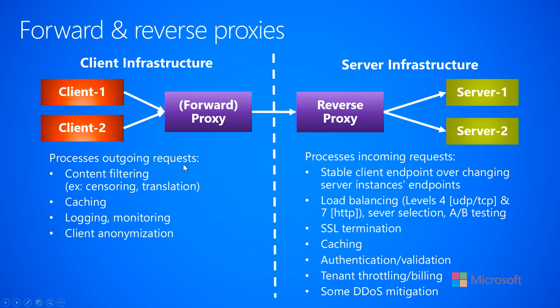A forward proxy processes outgoing requests, as opposed to the reverse proxy which processes incoming requests. The forward proxy can do content filtering — administrators might configure it to prevent certain traffic from going out, blocking websites deemed inappropriate, shutting down requests right at the proxy before any network traffic goes out over the internet. It could also be done for translation: if employees visit a website in a foreign language, the forward proxy can translate the contents into their native language before the HTML pages are returned.